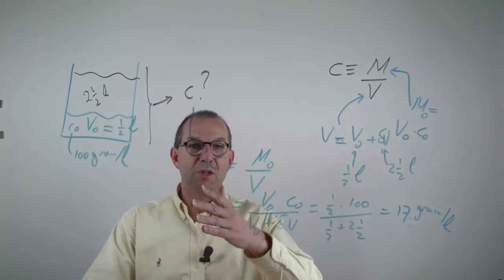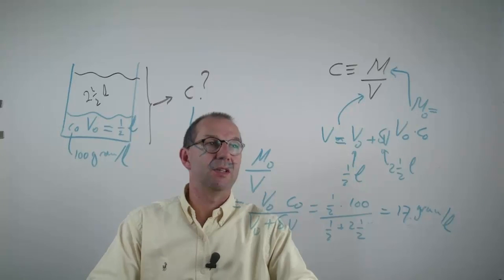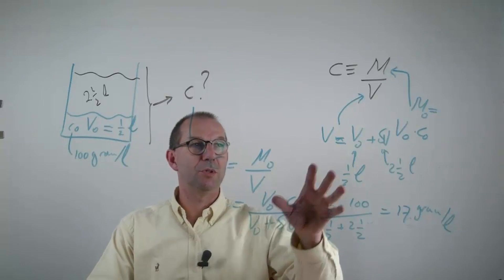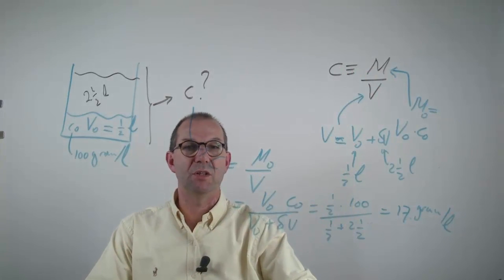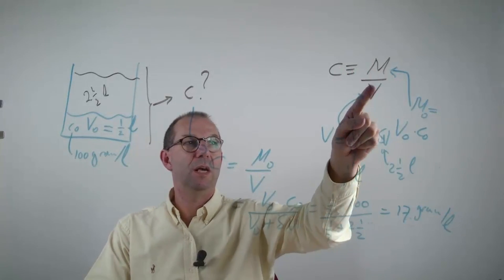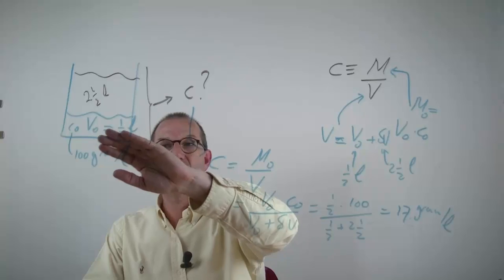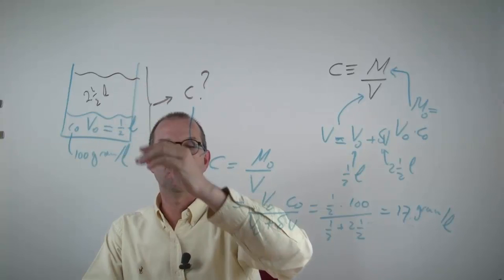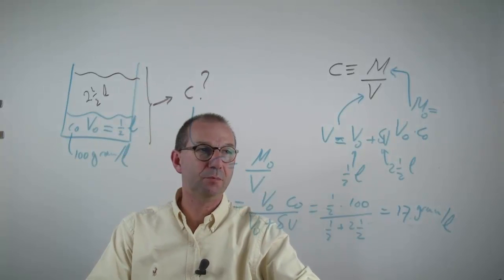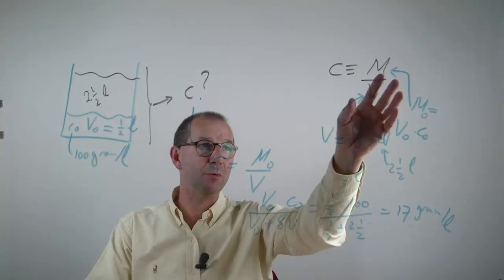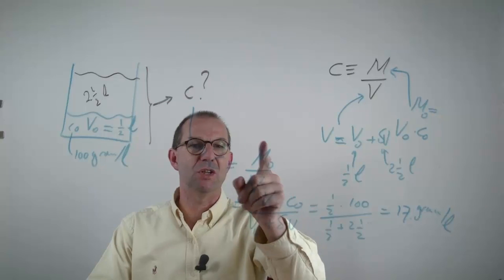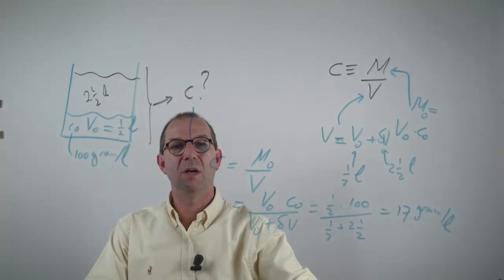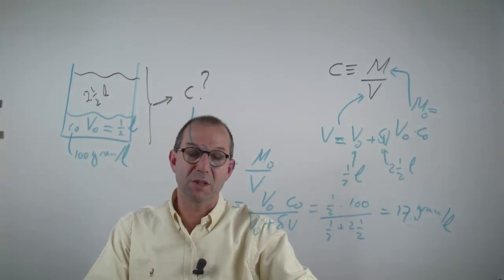What is the importance of this example? The importance is that starting from the definition and looking at how quantities change from one state to the other, we identify what is constant and what is known versus what is changing, and thus determine how the concentration changes.